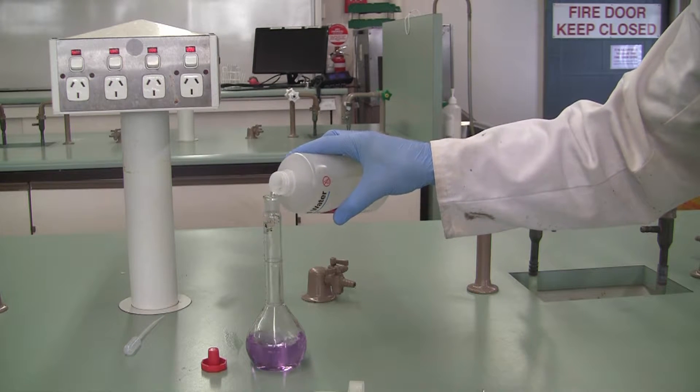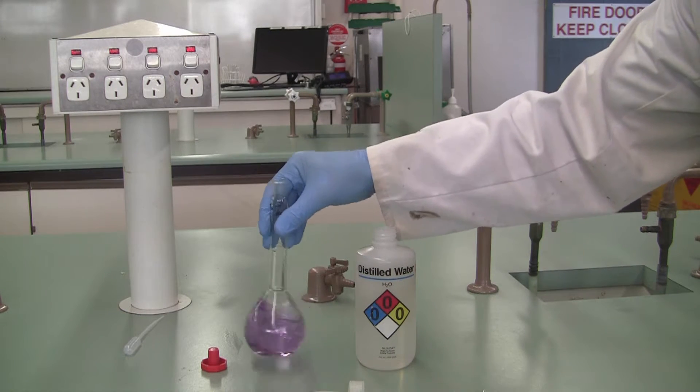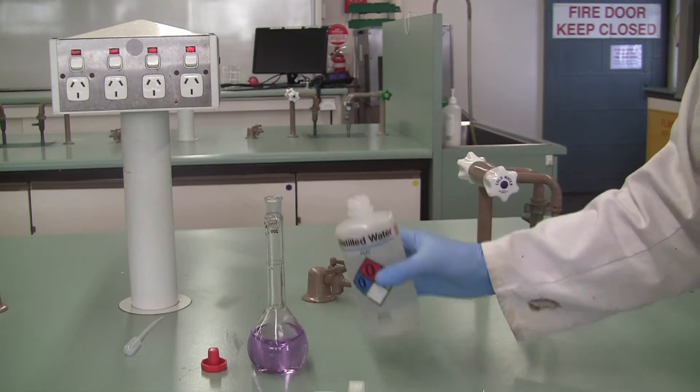Resist the temptation to put the lid on and mix that way. You'll get the liquid right up and down the flask and caught amongst the lid. Just 20 or 30 mils, give it a swirl and then add more water.